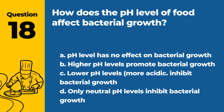Question 18. How does the pH level of food affect bacterial growth? A. pH level has no effect on bacterial growth. B. Higher pH levels promote bacterial growth. C. Lower pH levels, more acidity, inhibit bacterial growth. D. Only neutral pH levels inhibit bacterial growth. Answer: C. Lower pH levels, more acidity, inhibit bacterial growth. Lower pH levels in food, which are more acidic, tend to inhibit bacterial growth.